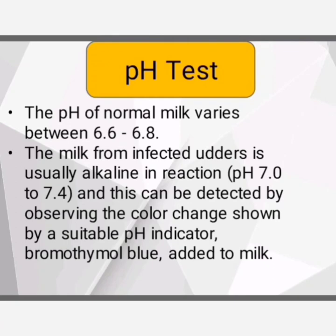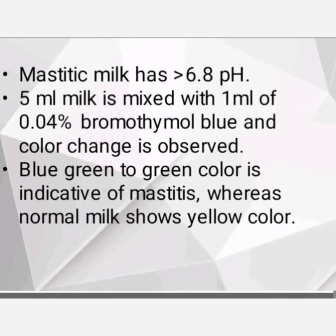Let's discuss the pH test. The pH of normal milk varies between 6.6 to 6.8. Milk from an infected udder is usually alkaline, with pH of 7 to 7.4. This can be detected by observing the color change shown by a suitable pH indicator — bromomethyl blue — added to milk. Mastitis milk has a pH greater than 6.8. For the procedure: 5 ml of milk is mixed with 1 ml of 0.04% bromomethyl blue and the color change is observed. A blue-green to green color indicates mastitis, whereas normal milk shows yellow color.